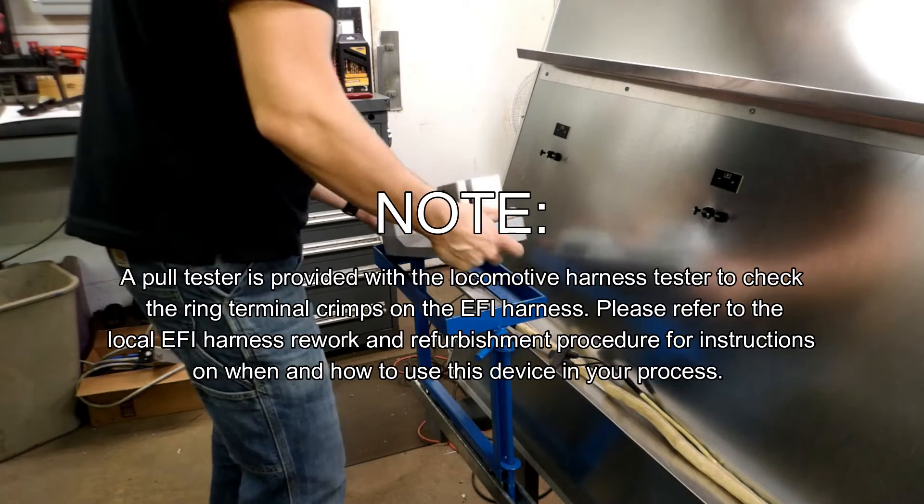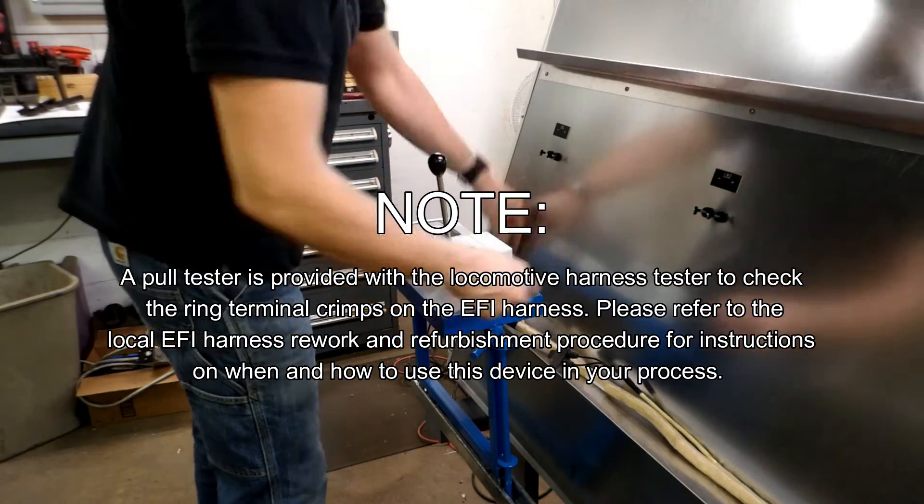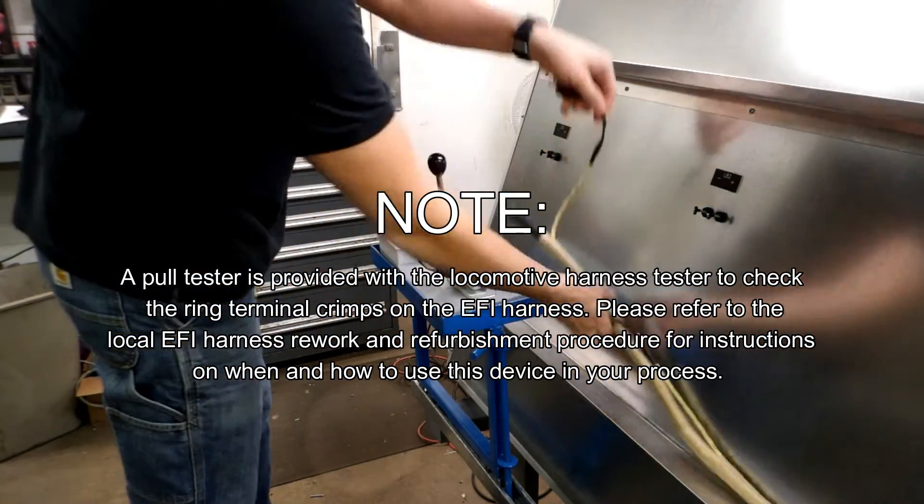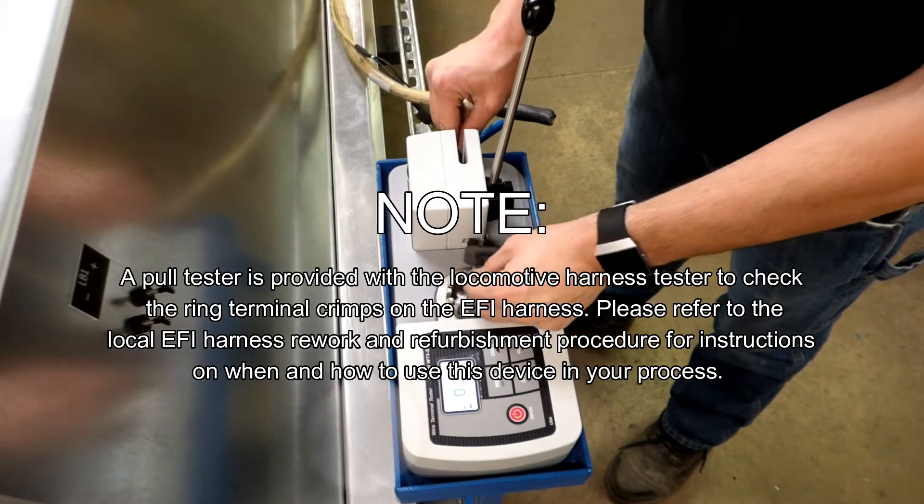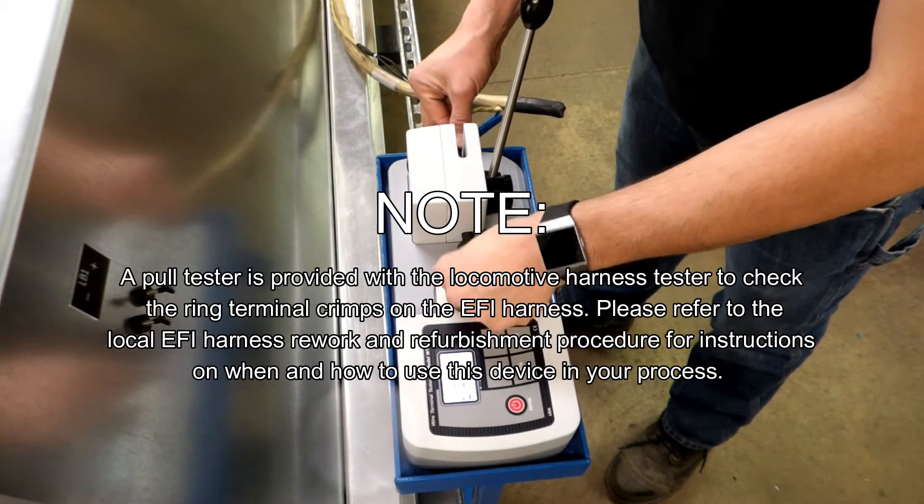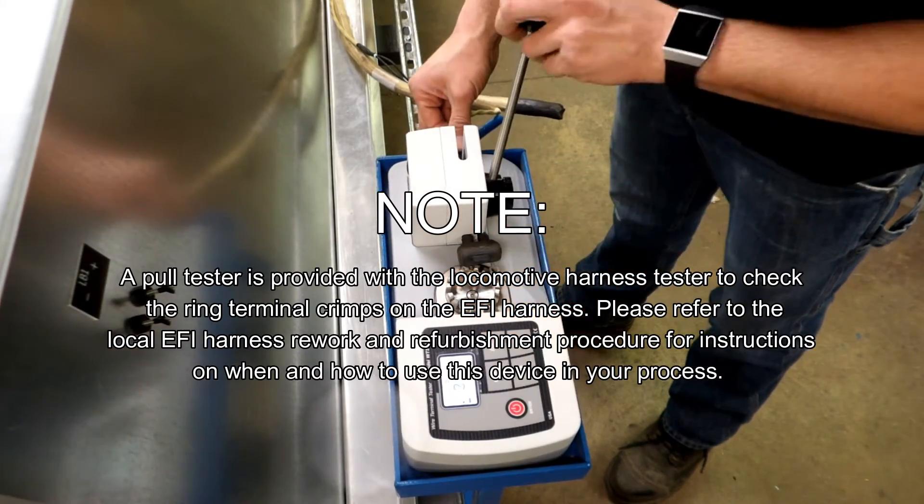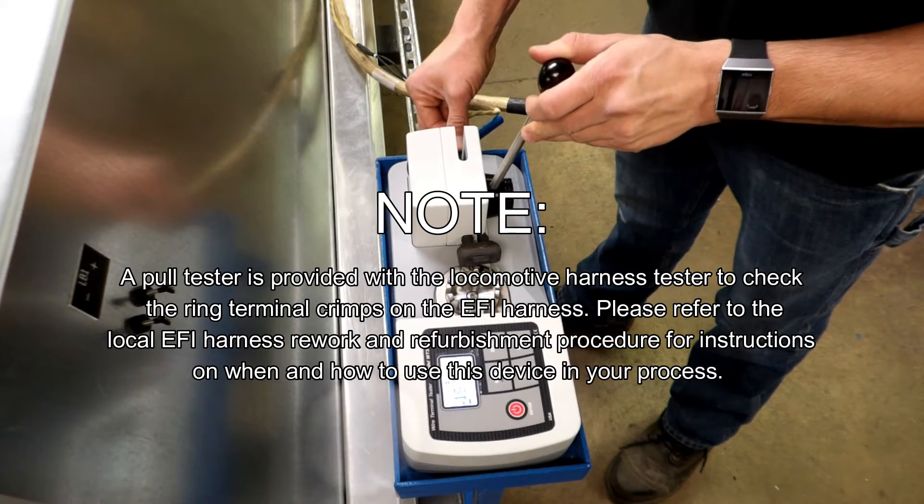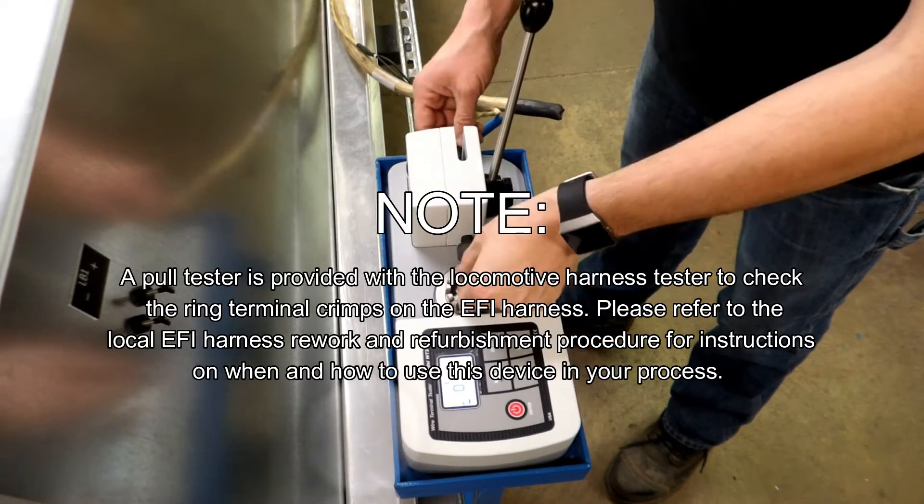A pull tester is provided with the locomotive harness tester to check the ring terminal crimps on the EFI harness. Please refer to the local EFI harness rework and refurbishment procedure for instructions on when and how to use this device in your process.